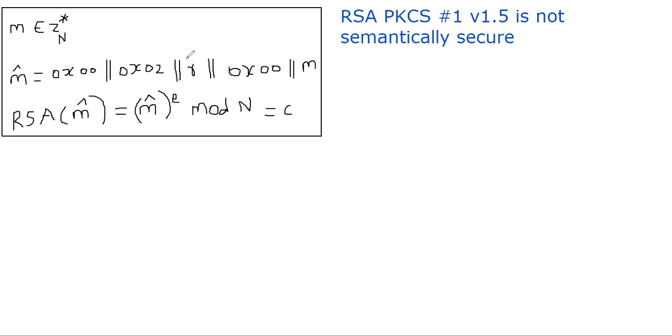And we also talked about the length of the random number R. It can be as small as 8 bytes. That's the smallest possible value for R is 8 bytes.